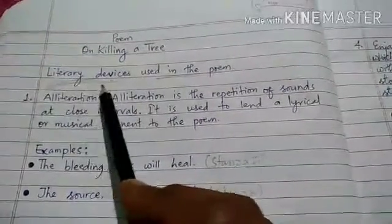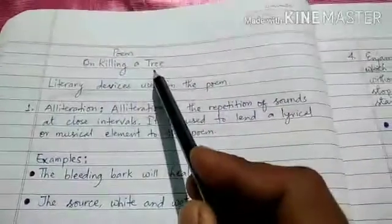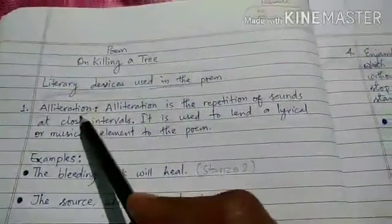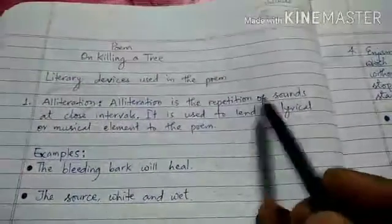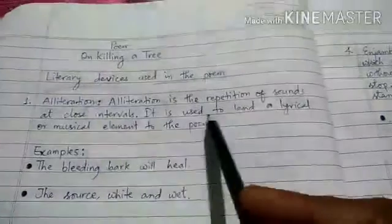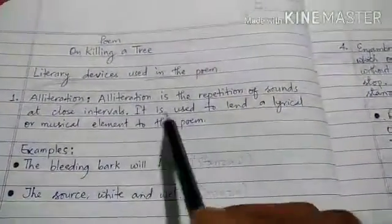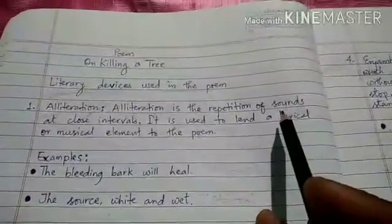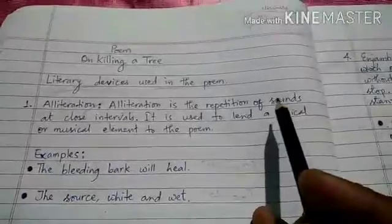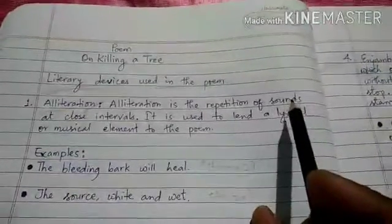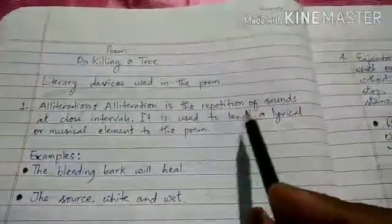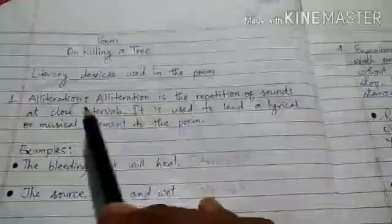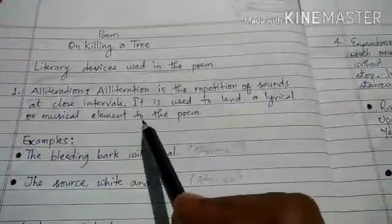The first literary device the poet has used in the poem 'On Killing a Tree' is alliteration. What is alliteration? Alliteration is the repetition of sounds at close intervals. It is used to lend a lyrical or musical element to the poem. Any sound — vowel or consonant — if the same sounds are repeated in the same lines of the poem at close intervals, then it is called alliteration.